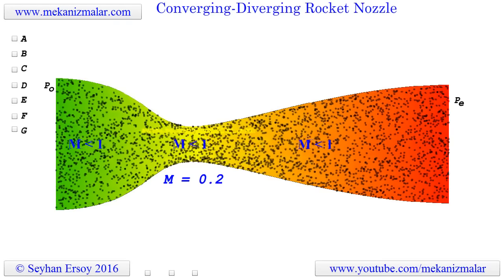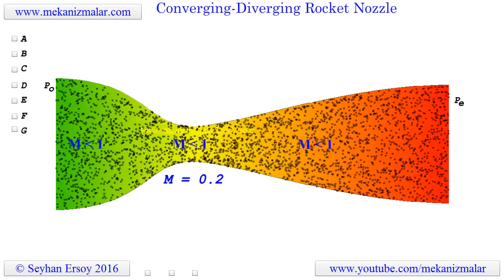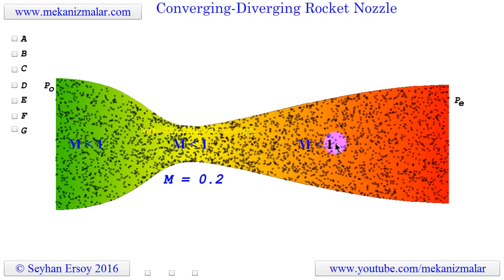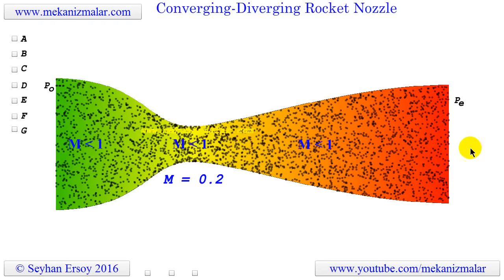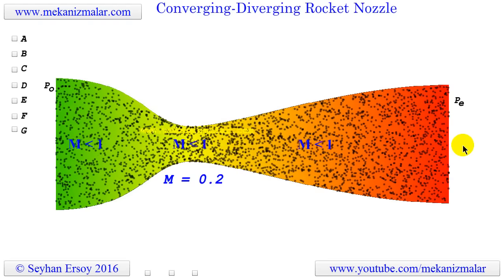First, the rocket must expel a maximum amount of burned gas in a given time interval, and second, the speed of the gas being expelled should be as high as possible.